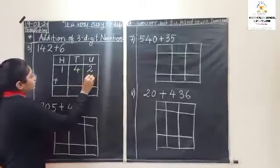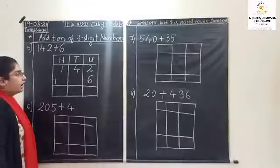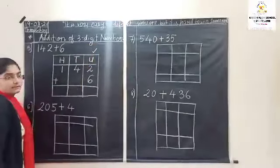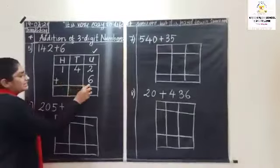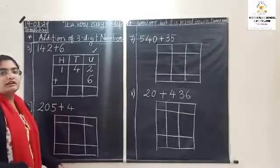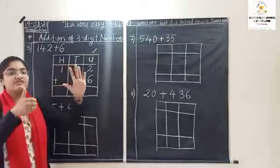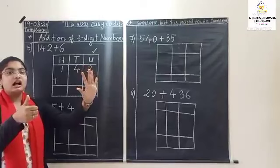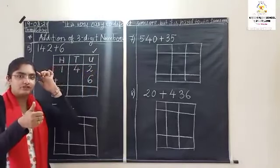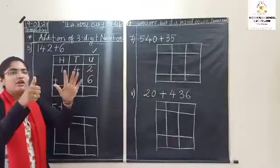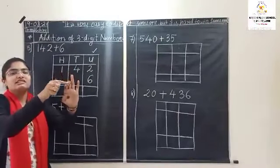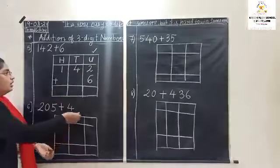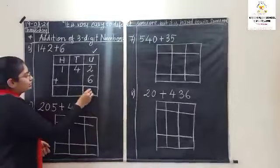Six will come in units place. Now do the addition — always start with units place. Two plus six: keep two in mind, remove six fingers. Count after two: three, four, five, six, seven and eight. So two plus six is equal to eight.